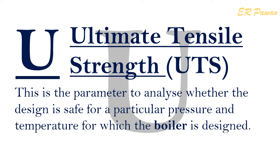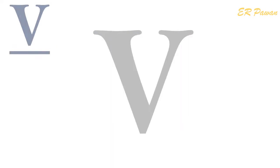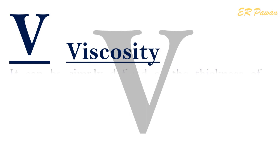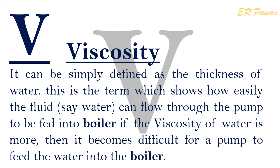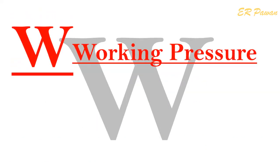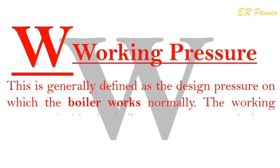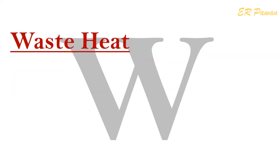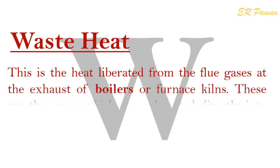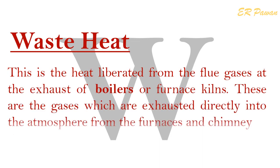U — Ultimate Tensile Strength (UTS): This is the parameter used to analyze whether the design is safe for a particular pressure and temperature for which the boiler is designed. V — Viscosity: Viscosity can be simply defined as the thickness of water. It is the term which shows how easily a fluid can flow through the pump to be fed into the boiler. If the viscosity of water is more, it becomes difficult for a pump to feed the water into the boiler. W — Working Pressure: This is generally defined as the design pressure at which the boiler works normally. The working pressure inside the boiler must not exceed the design pressure.